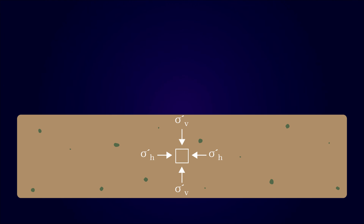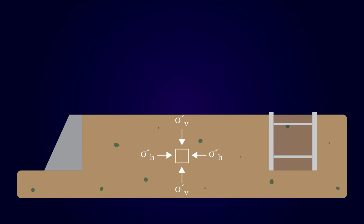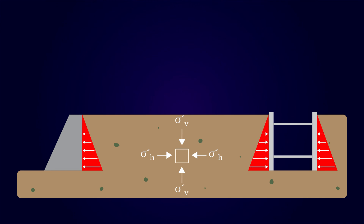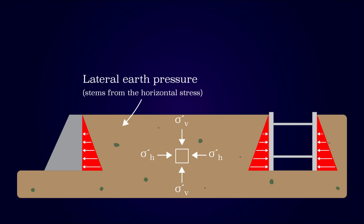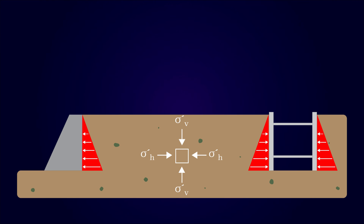Imagine you are constructing or placing a retaining wall, trench box, or any structure that needs to hold back soil. Being able to assess the magnitude of the lateral earth pressure on these structures is crucial to ensure a stable and safe design, since the soil has a natural tendency to move and redistribute to ensure equilibrium. In these instances, the structure needs to compensate for the missing soil and ensure equilibrium.